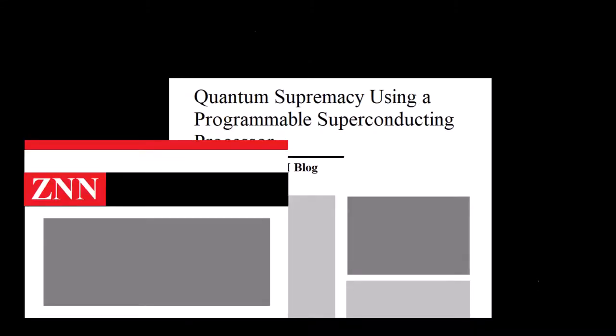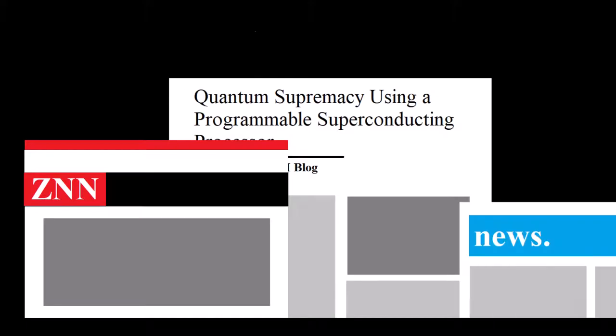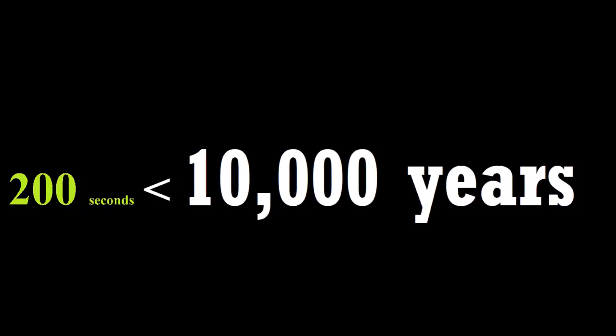Google reported supposedly solving a given optimization problem with a quantum computer in 200 seconds. In comparison, the fastest supercomputer would have taken an estimated 10,000 years to determine the answer.